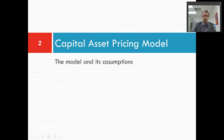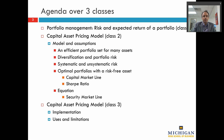So first of all let's talk about the model and its assumptions. We're going to have an agenda over three classes. In our first suite of videos we talked about risk and expected return of a portfolio. Now we're getting into the specifics of the capital asset pricing model, and in a subsequent suite of videos we're going to talk about the implementation of the model — the practical way you estimate a discount rate using this model — and some of its limitations.